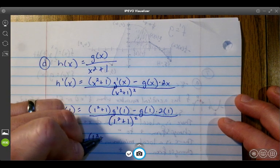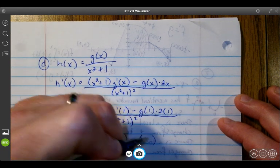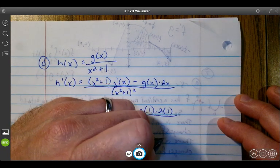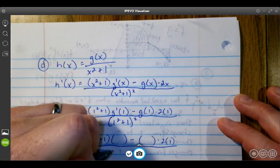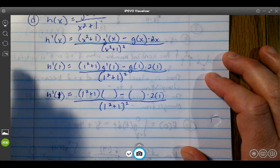If you left 1² + 1, that's fine. Times g'(1) minus g(1), which you need to figure out, times 2 times 1. If you left that alone, that's fine as well. And if you left the denominator alone, (1² + 1)², that's fine also.